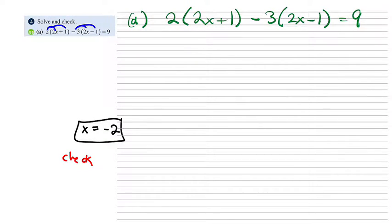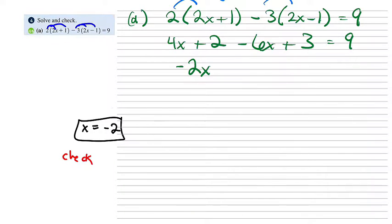Hopefully you're able to look ahead a bit and try to work it for yourself, then see if your technique matches mine. First thing I would do here is distribute the 2 and distribute the negative 3. So then 2 times 2 is 4x plus 2, minus 6x plus 3, equals 9. Now on the left, let's combine like terms. We got a 4x plus a negative 6x gives us a negative 2x. 2 plus 3 gives us 5.